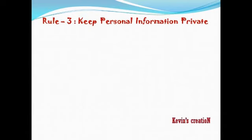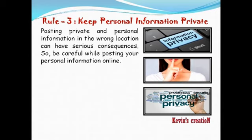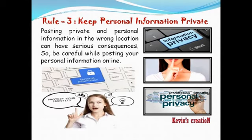Rule three: keep personal information private. Whatever is personal should not become public. You have to keep the privacy of your information. Posting private and personal information in the wrong location can have serious consequences. If you are giving your personal details online, it could be dangerous. So protect your identity — you need not give all your personal details on the internet.